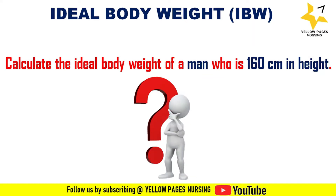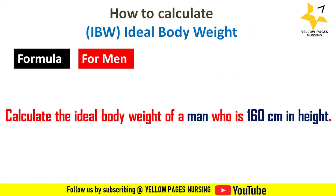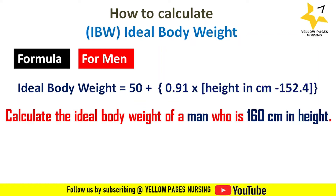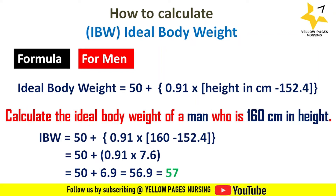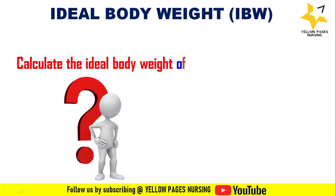The formula to calculate ideal body weight for men is: IBW = 50 + 0.91 × (height in centimeters − 152.4). Applying the example: IBW = 50 + 0.91 × (160 − 152.4), which gives the answer 57. So the ideal body weight is 57 kilograms.